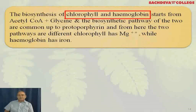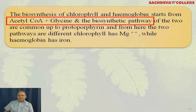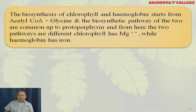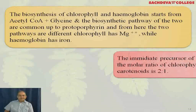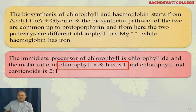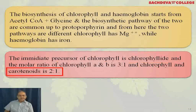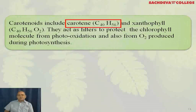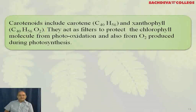The biosynthesis of chlorophyll and hemoglobin starts from acetyl coenzyme A plus glycine, and the biosynthetic pathway of the two is common up to an intermediate compound called protoporphyrin. From here the two pathways differ because chlorophyll has a magnesium atom while hemoglobin has iron. The molar ratio of chlorophyll A to B is 3:1, and of chlorophyll to carotenoid is 2:1. Carotenoids include carotene (C40H56) as a hydrocarbon, and xanthophyll (C40H56O2), which also contains oxygen. They act as filters to protect chlorophyll from photo-oxidation and from O2 produced during photosynthesis.